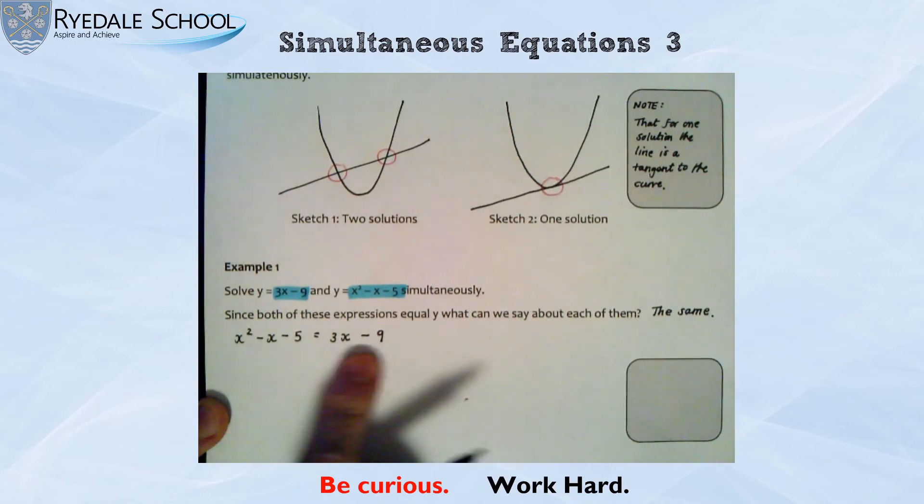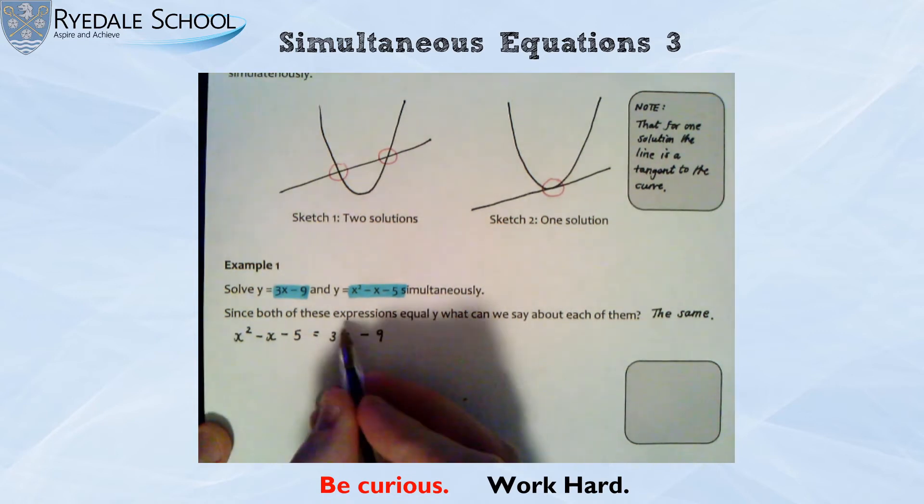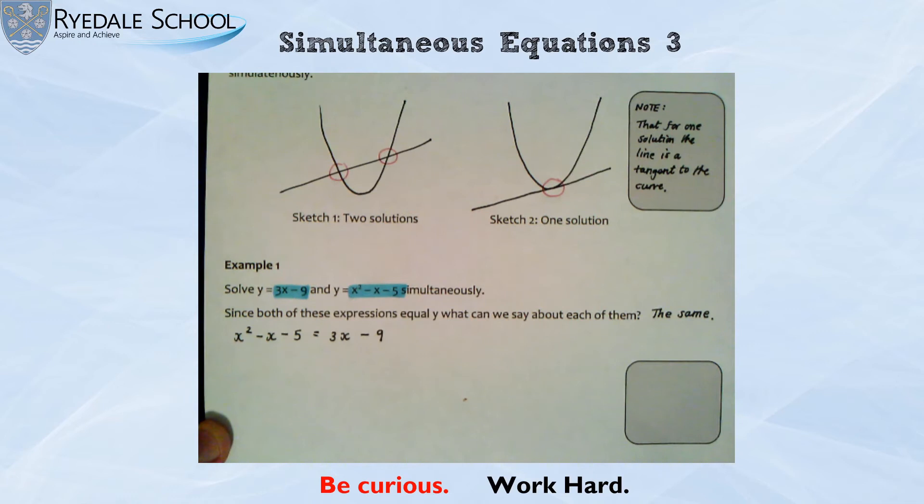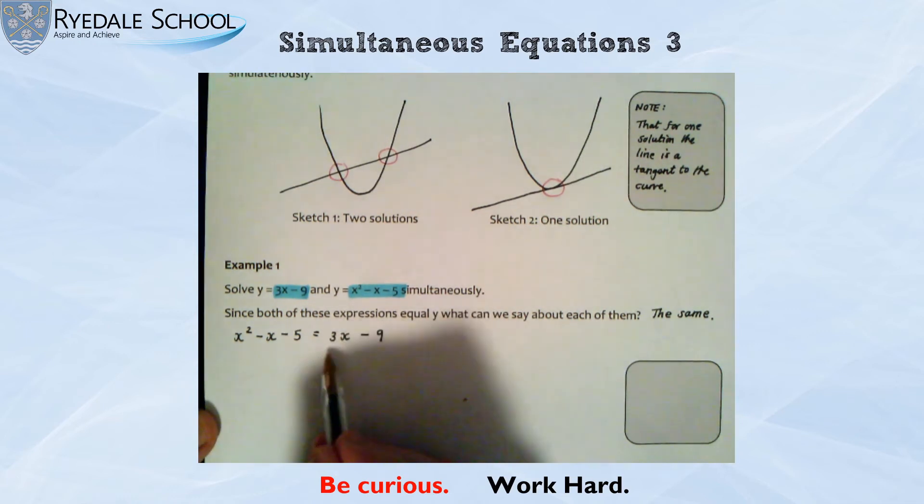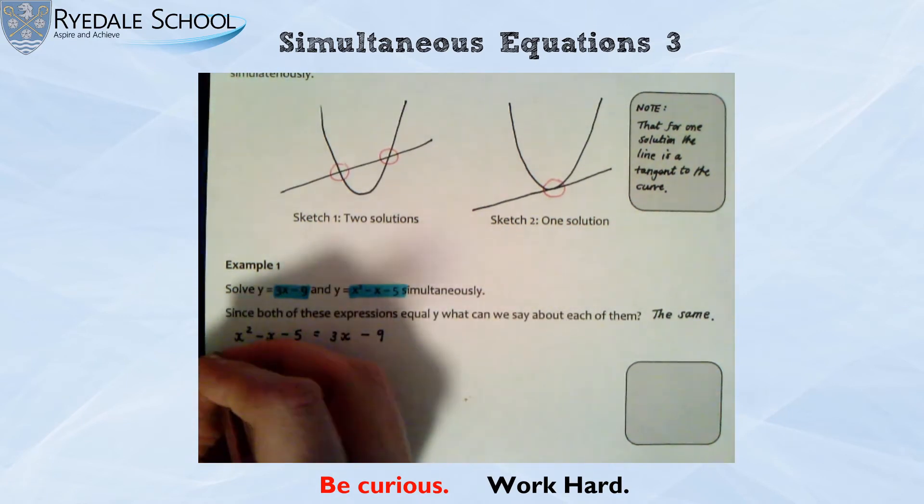Now, what we've got here is now an equation just in one variable. Well, what type of equation is it? Well, it is a quadratic equation. And I can see it's a quadratic equation because the biggest power I've got is a squared. So how am I going to solve this quadratic equation? Well, just like any quadratic equation, we need to make it equal zero. I'm going to make this side equal zero. And I can make this side equal zero by doing the inverse of 3x, subtracting 3x, and doing the inverse of take away 9, which is add 9. So I'll do that in two steps. You might be happy doing it all in one go.